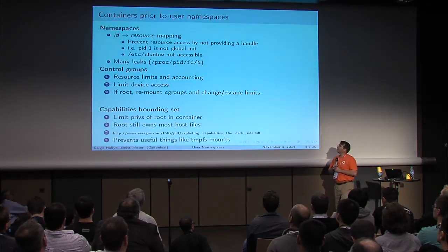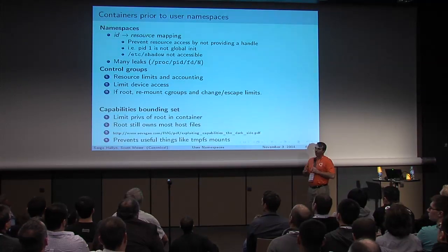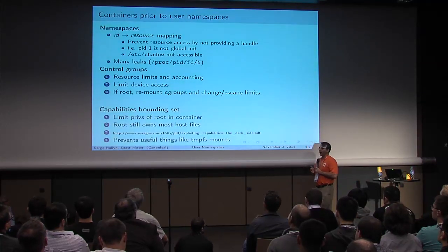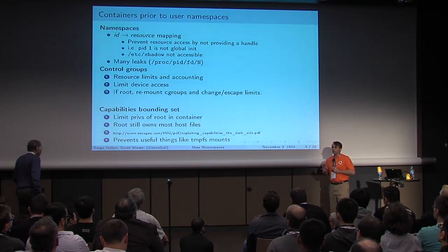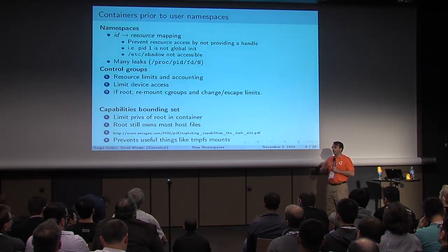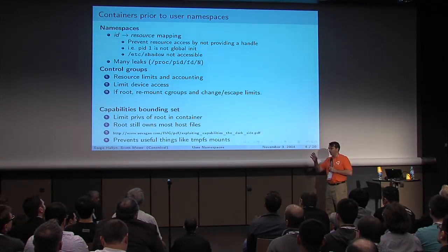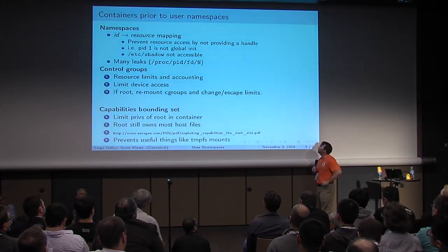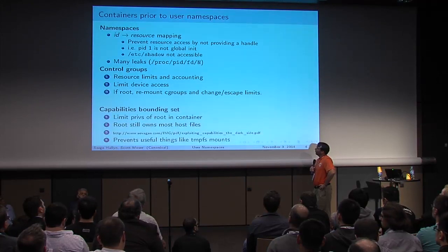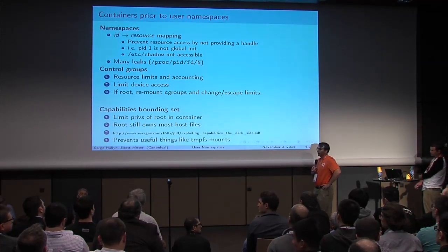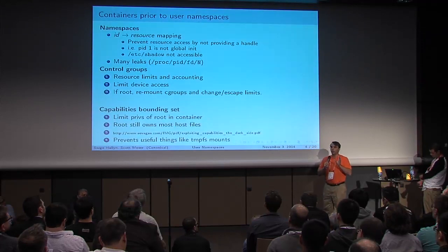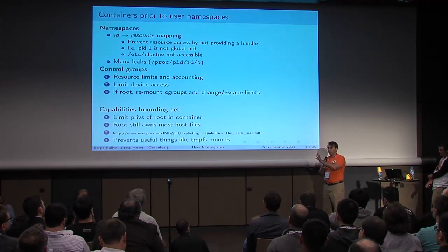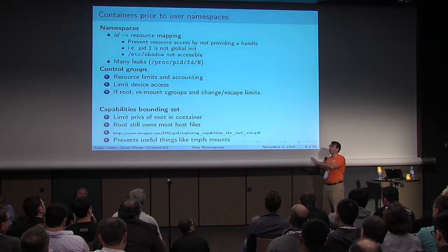A namespace, in the kernel sense, means that any time you ask the kernel to act on an identifier — a path name, file descriptor, or PID — the kernel translates that identifier through your namespace to some kernel resource. When you namespace something like process IDs, creating a new task can give it a clean namespace where its identifiers refer to different objects than those of another task.